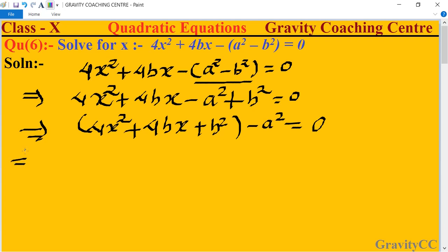Now, 4x² is the square of 2x, plus 2 times 2x times b, plus b whole square.